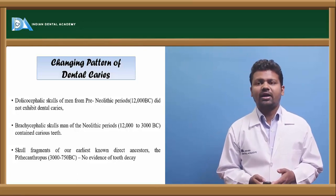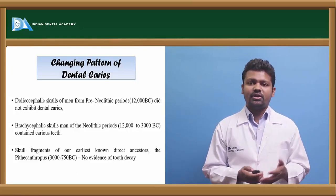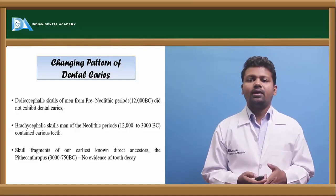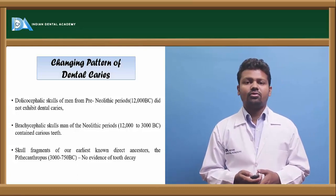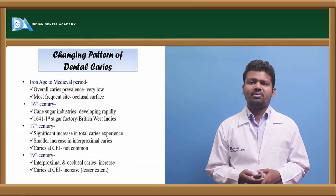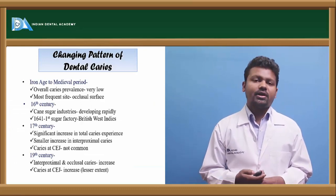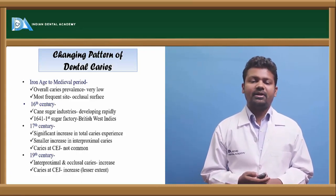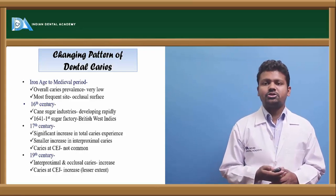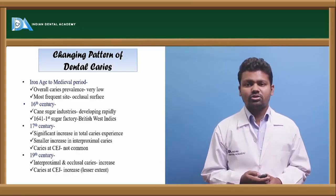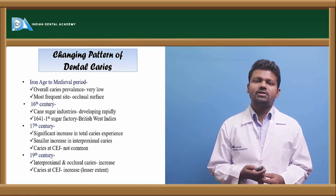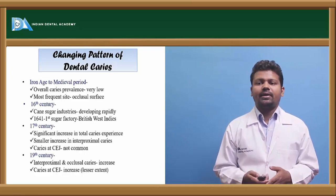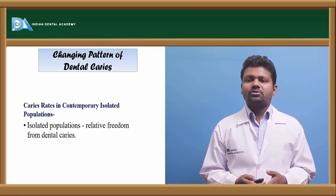Some changing patterns of dental caries: dolichocephalic skulls never exhibited dental caries in 12,000 BC, whereas brachycephalic specimens contained carious teeth, and Pithecanthropus had no evidence of tooth decay. In the Iron Age and medieval period, overall caries prevalence was very low. In the 16th century, cane sugar industries developed rapidly, promoting dental caries. In the 17th century, caries at the CEJ was not common, with a smaller increase in interproximal caries at the beginning of the 17th century. In the 19th century, interproximal caries cases were very high.